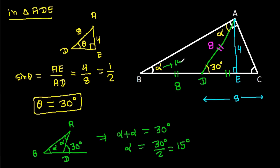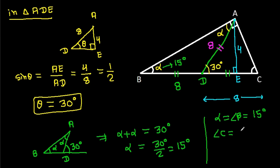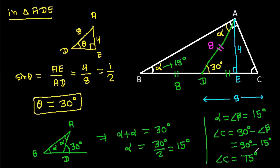This angle α equals angle ABD equals angle B equals 15°. And angle C equals 90° minus angle B equals 90° minus 15°, so angle C equals 75°.